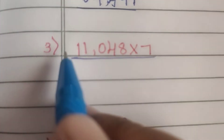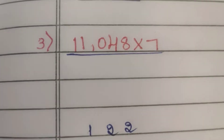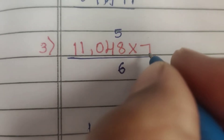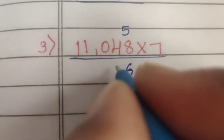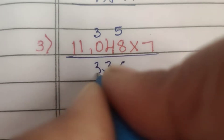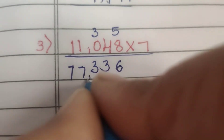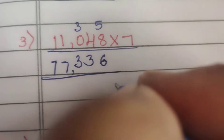Third one: 11,048 into 7. 7 eights are 56, so write 6 and carry 5. 7 fours are 28, 28 plus 5 is 33, so write 3 and carry 3. 7 zeros are 0, 0 plus 3 is 3. 7 ones are 7. So the answer is 77,336.